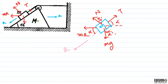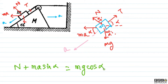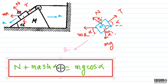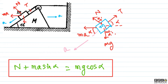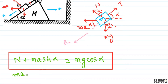In the direction along the incline, the resultant is zero. Now, for forces down the incline — along the incline forces — I can write: m·a·cos alpha, and this is minus T.